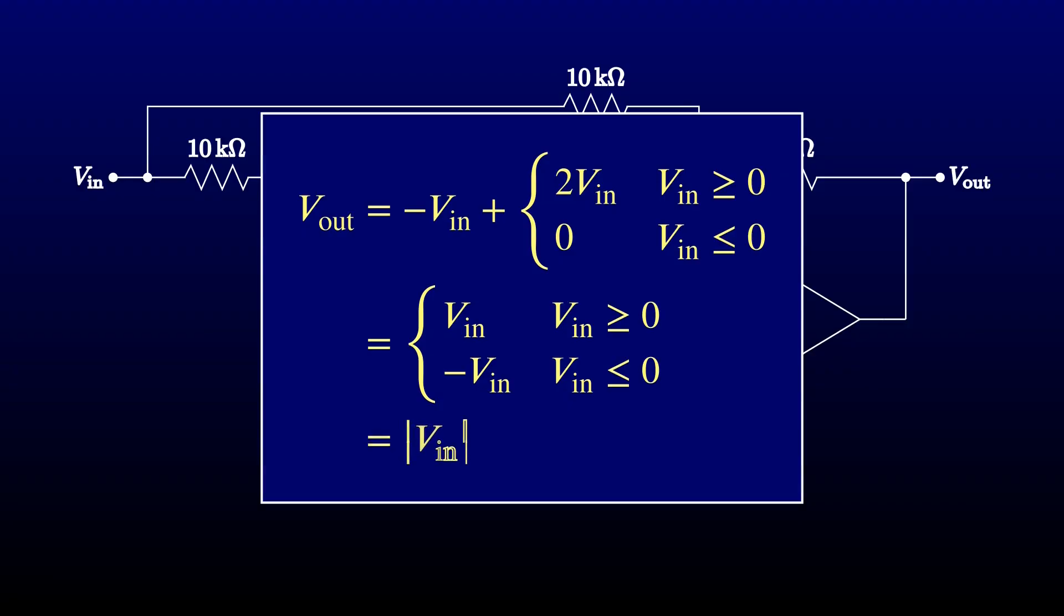At the cost of two more equal-valued resistors, we've made our half-wave rectifier into a full-wave rectifier, also called an absolute value circuit. Let's try it.